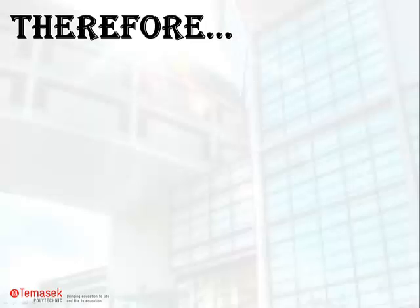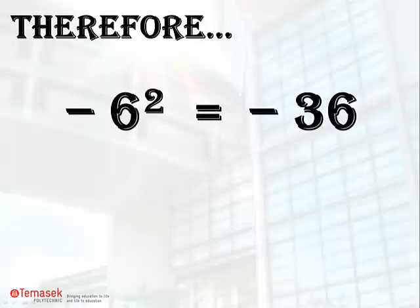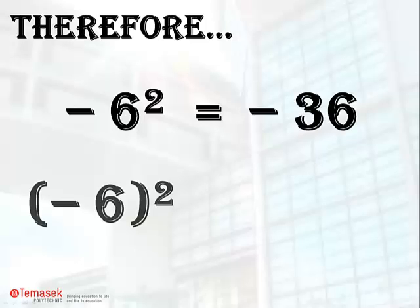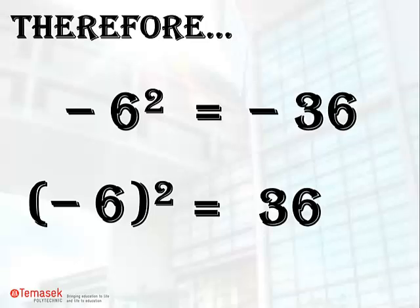Therefore, negative 6 squared equals negative 36, and open bracket negative 6 close bracket squared equals 36. The two answers are very different. One is a positive value, while the other is negative.